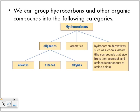We can group hydrocarbons and other organic compounds into the following categories. Hydrocarbons can be aliphatic — and aliphatics get separated into the alkanes, the alkenes, and the alkynes. This lesson is going to cover naming the alkanes. Other important types of hydrocarbons include the aromatics, and others include derivatives such as alcohols, esters — which are the compounds that give fruits their aromas — and amines, which are components of amino acids, but we won't look at those today.